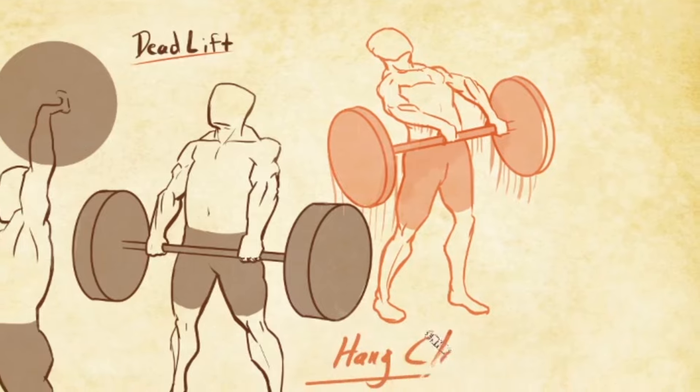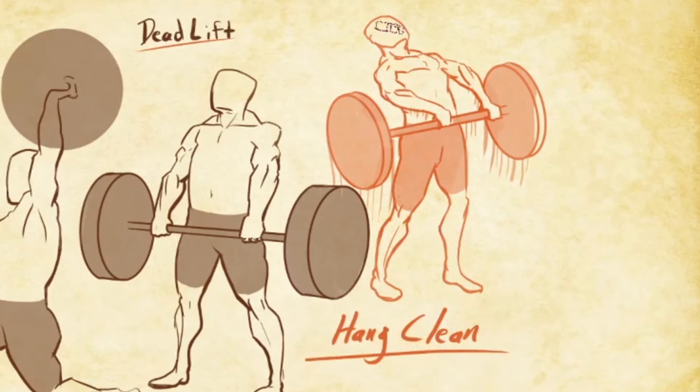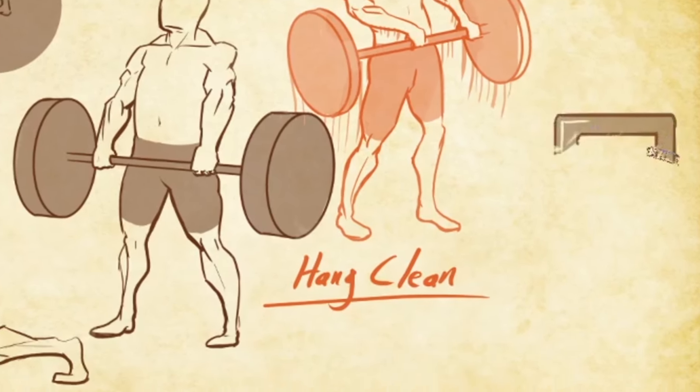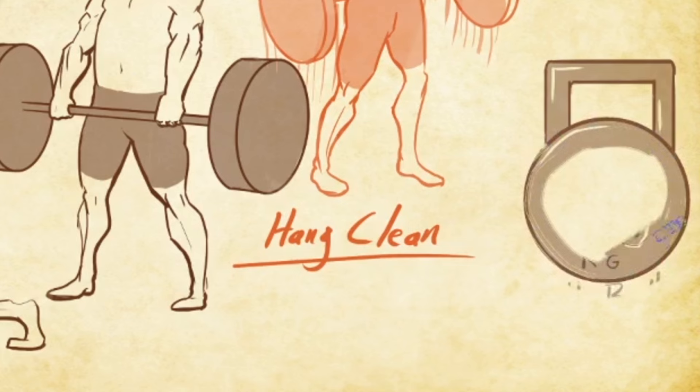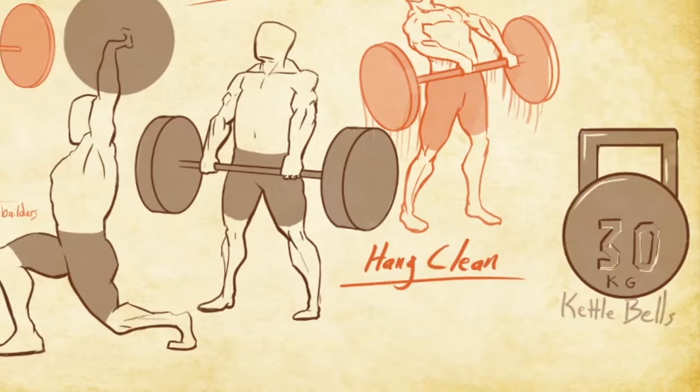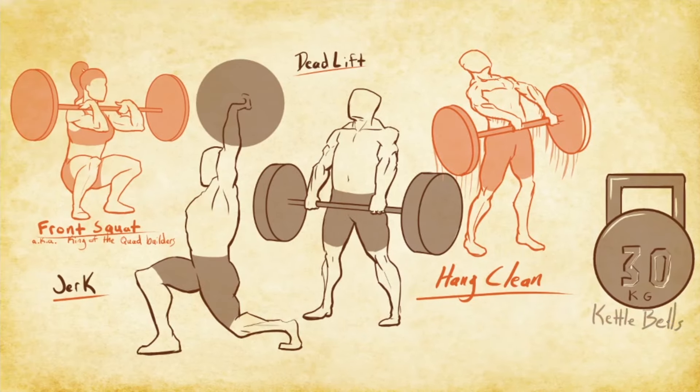Another popular tool for building an Olympic lifting foundation can also be found in kettlebell training. Russian lifting programs in particular were known for successfully preparing new lifters with kettlebell progression. Kettlebells are easy for the beginner and great for learning strong hip extension, with lifts such as the swings, kettlebell cleans, and kettlebell snatches.